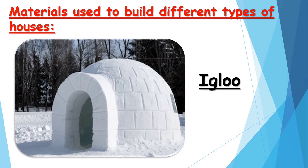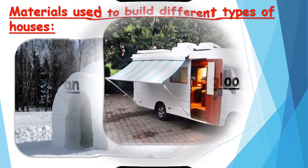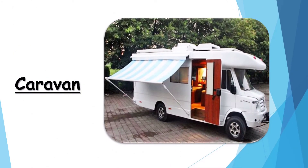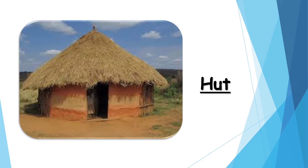Today we will learn a new topic which is about materials used to build different types of houses. The first type of house is an igloo — an igloo is made up of ice or snow. Next is a caravan — a caravan is made up of wood and synthetic materials. This is a hut — a hut is made up of mud or straw. The hut is a kacha house and we generally find huts in villages.